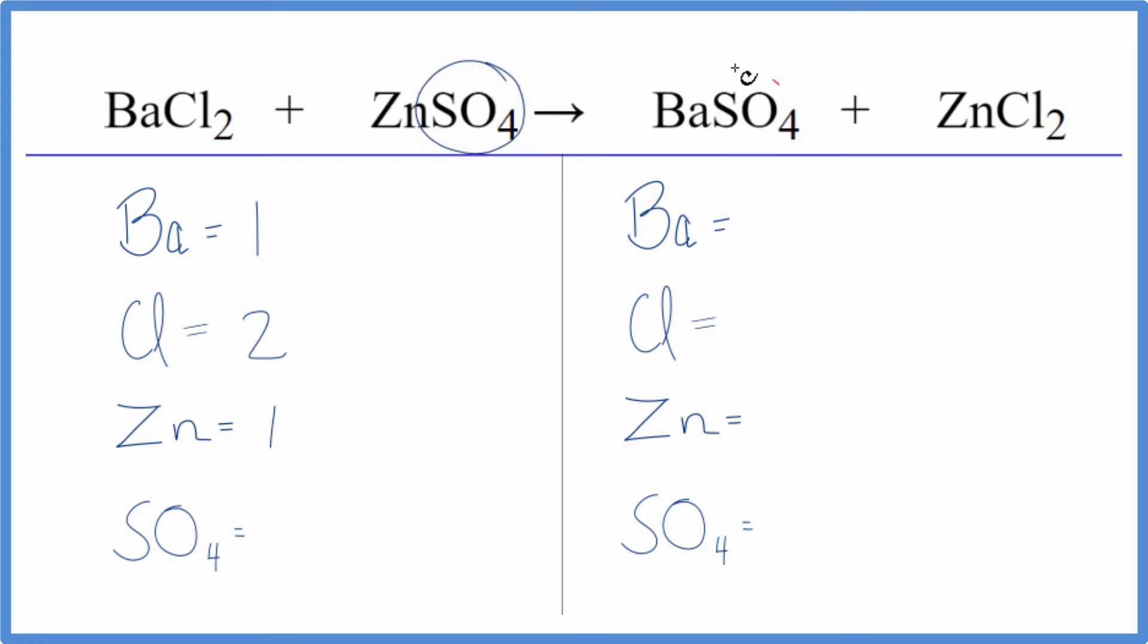and it stays together in this reaction. We have it right here. So this polyatomic ion, SO4, we're going to count that as just one thing. We have one sulfate here in the reactants. That'll help us a lot as we go to balance the equation.